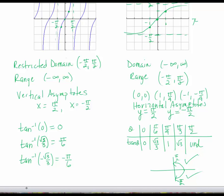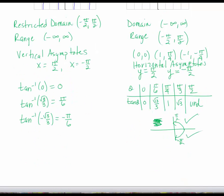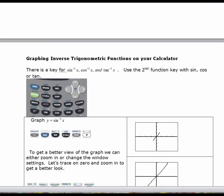When inverse tan is positive, you always have a positive acute angle from the first quadrant. For inverse cosine, when the argument is negative, you find yourself in the second quadrant. There are no negative angle answers for inverse cosine because its range is from 0 to pi. Next, I want to show you how to graph an inverse trig function using your calculator — the TI — in radian mode.